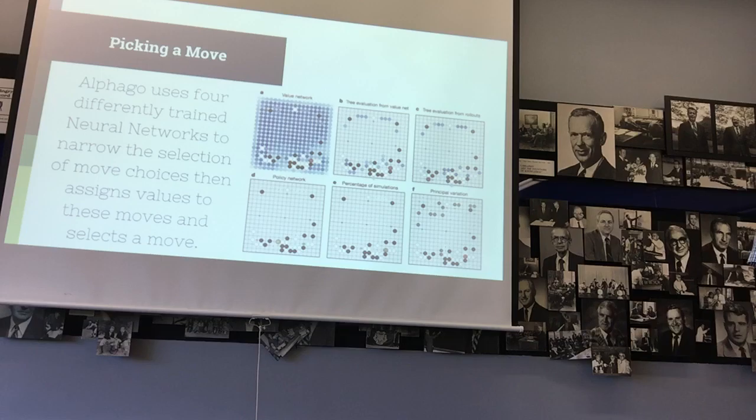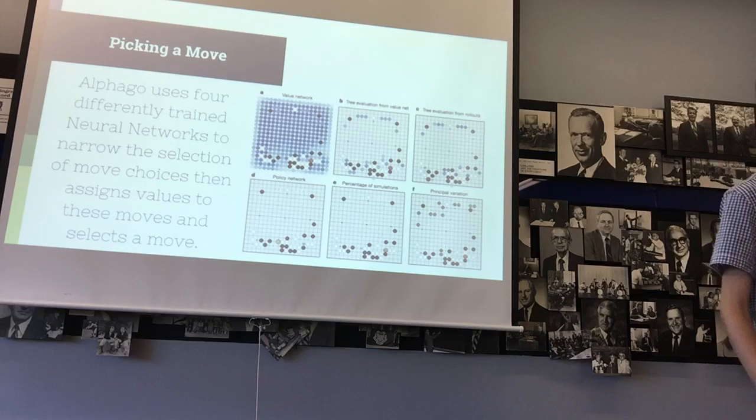So, AlphaGo uses four different neural networks to eliminate a lot of these moves. So they have two neural networks that are trained using, as I said before, 30 million expert moves. So, it gave, they gave, okay, this board state and then trained it whatever move that the expert made. And then the other two neural networks were trained through games of self-play. So the neural networks would play each other and basically it would encourage moves that led to a victory and discourage moves that led to a loss.